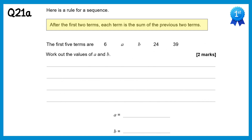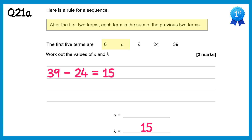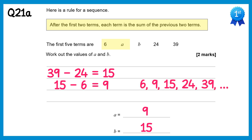In this special sequence, each term after the first two is the sum of the previous two. Working backwards: B + 24 = 39, so B = 39 − 24 = 15. Then 6 + A = B = 15, so A = 15 − 6 = 9. The sequence is 6, 9, 15, 24, 39.